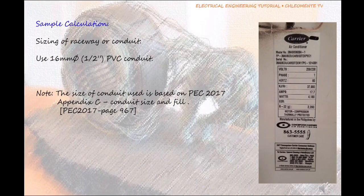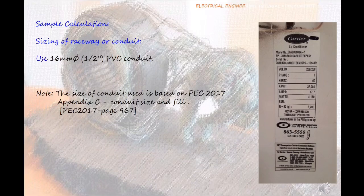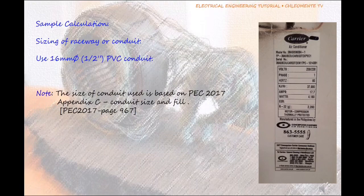Sizing of Raceway or Conduit. Use 16 millimeters diameter, half an inch, PVC conduit. Note: The size of conduit used is based on PEC 2017 Appendix C, Conduit Size and Fill, PEC 2017 Page 967.